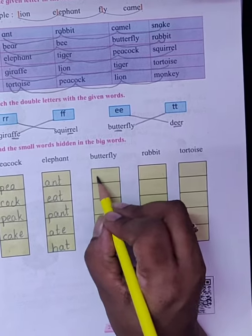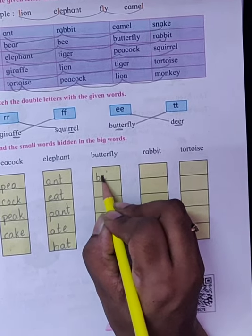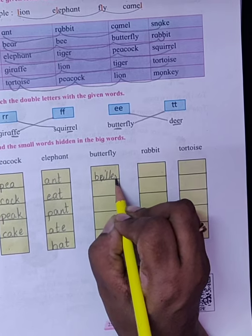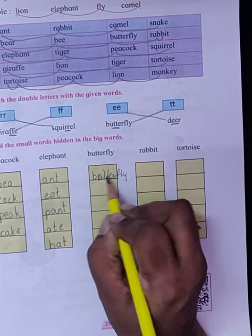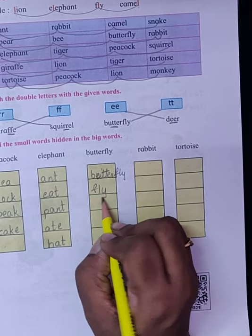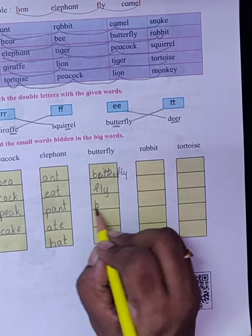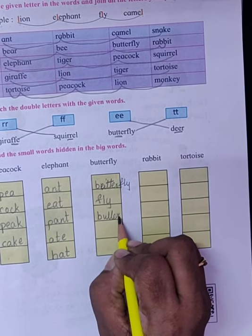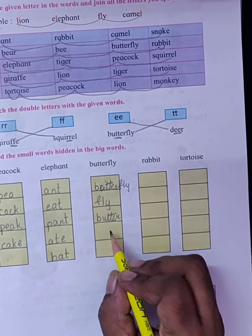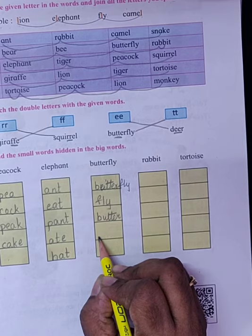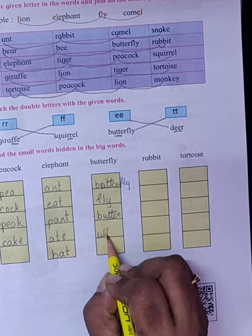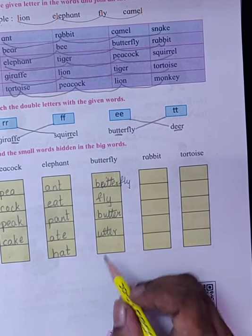Next butterfly. We will write over here butterfly. Fly, butter, utter, butt.